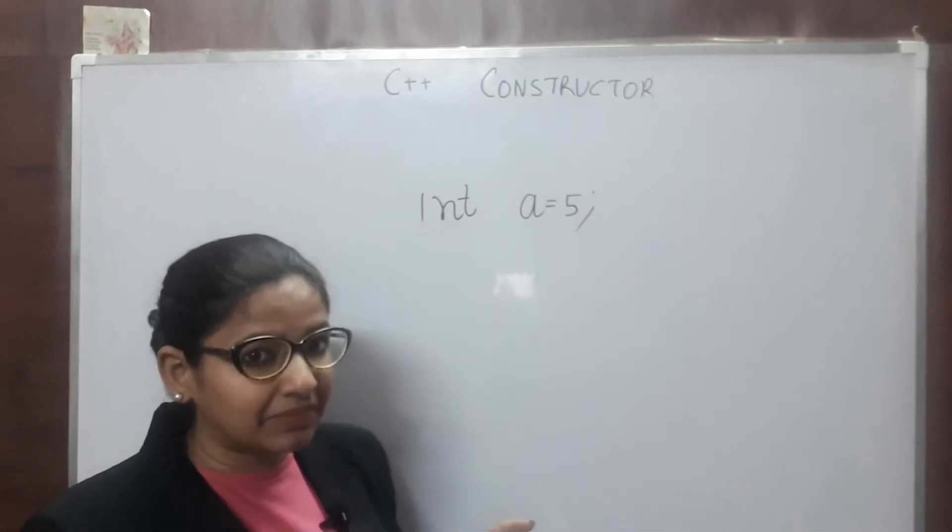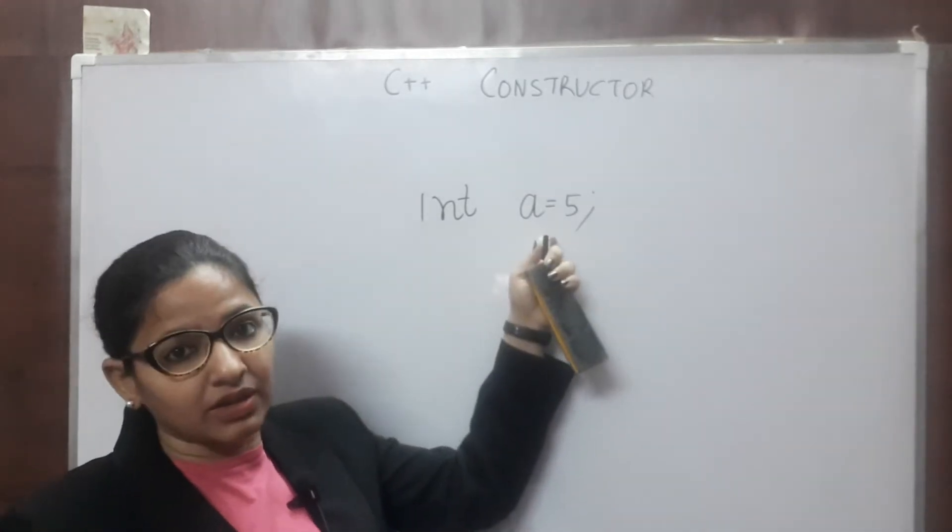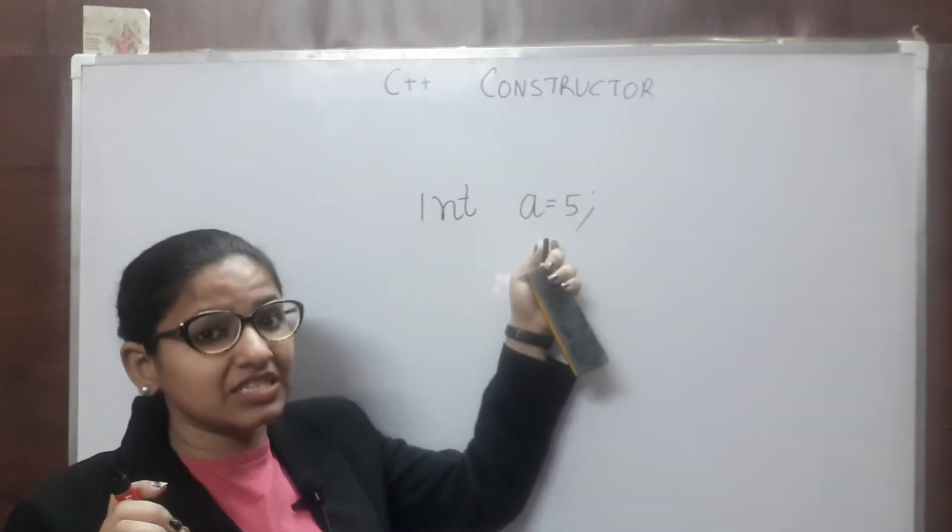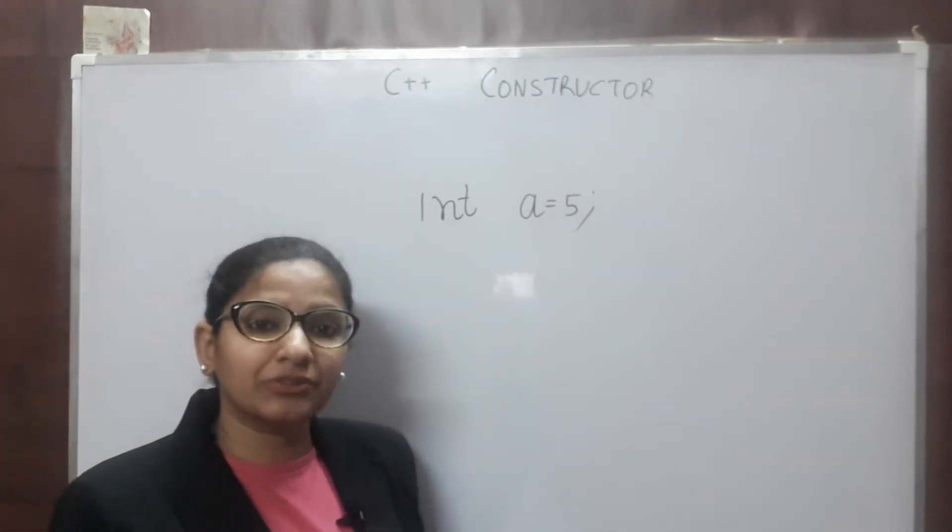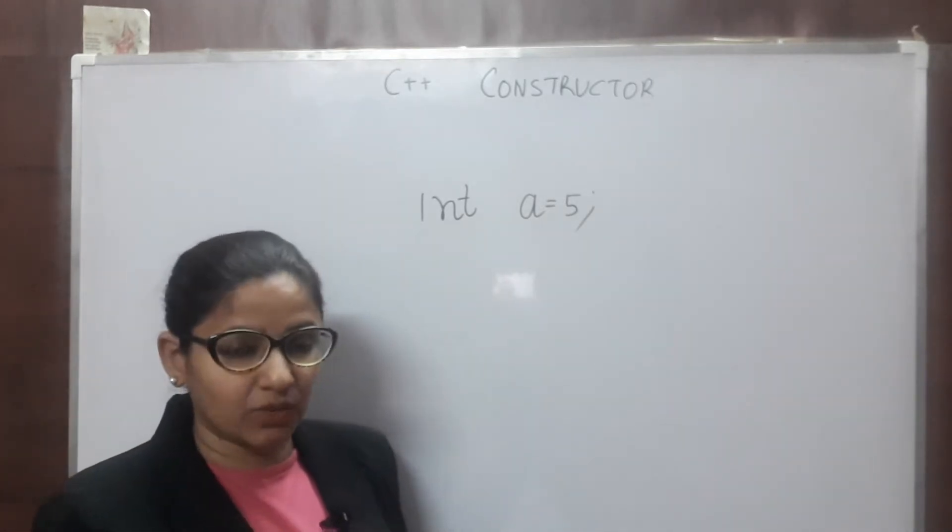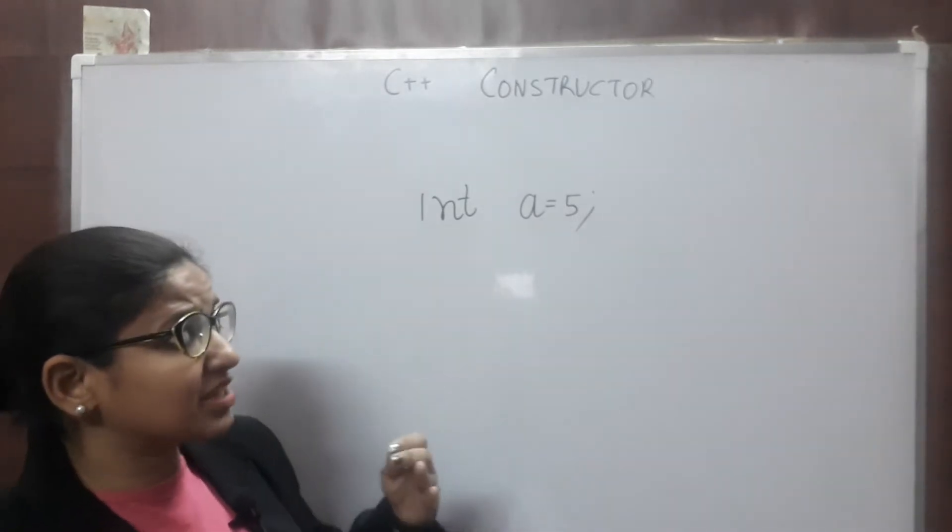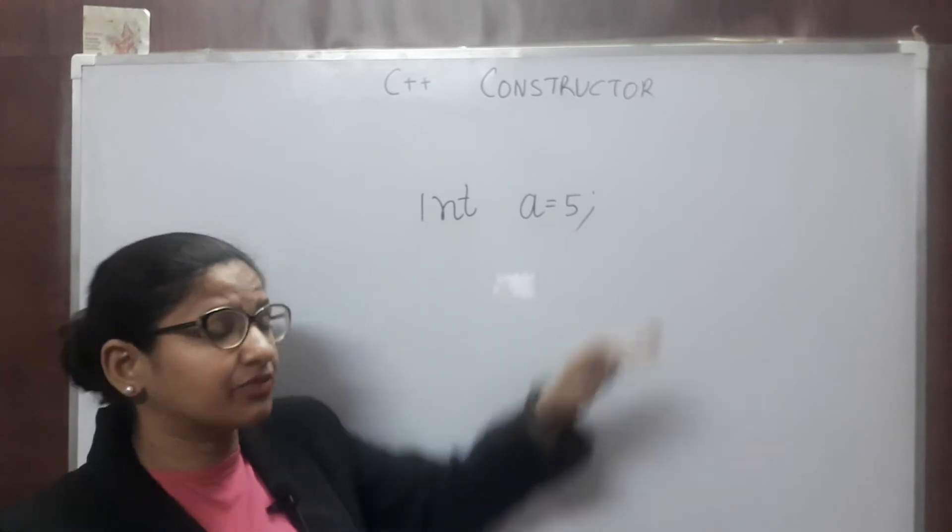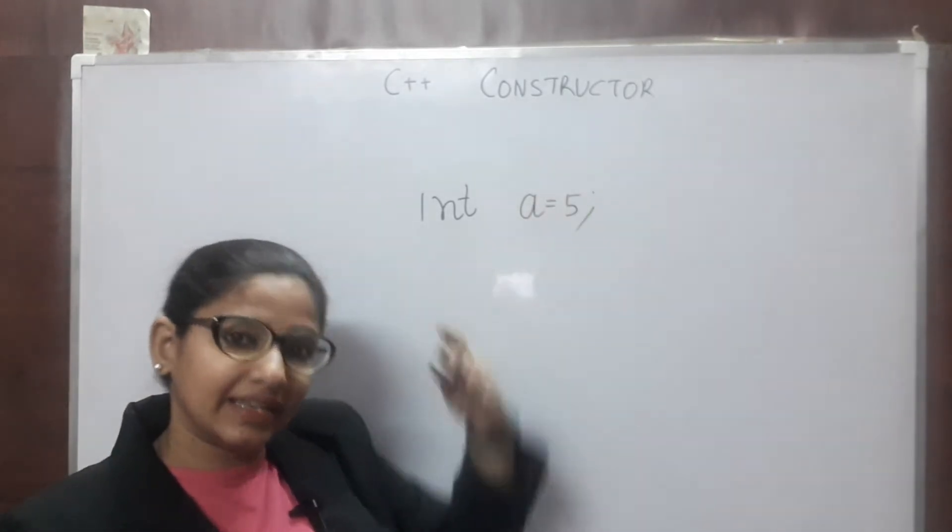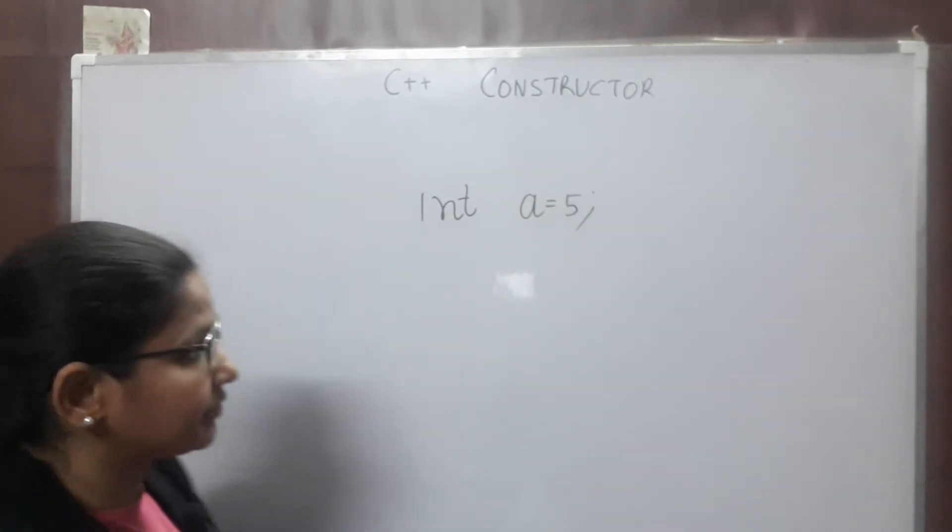No dummy data, no random data. It is having one value that is 5. Similarly, we want to initialize objects with some values. So, for initializing objects of a class, we have Constructors. Let's see Constructor concept with an example.